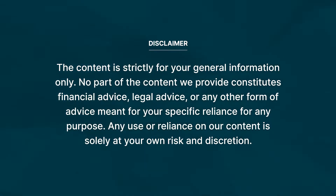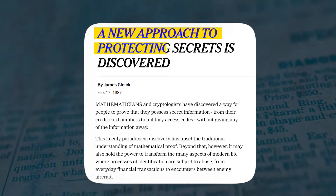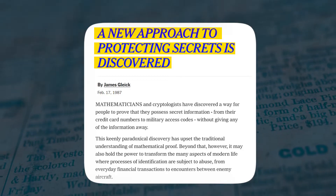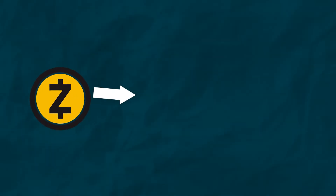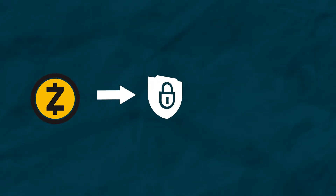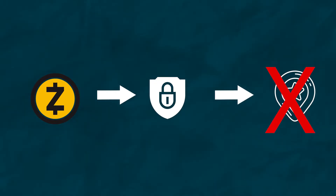Zero-knowledge proof is a way of doing authentication to prove that something is known without revealing directly the known information. This concept was developed by a group of mathematicians in the 1980s and has been used by various cryptocurrencies such as Zcash, which unlike public blockchains like Bitcoin, gives you the option of confidential transactions and financial privacy through shielded addresses. Let's get back to our mysterious cave and see how this whole concept of zero-knowledge works.